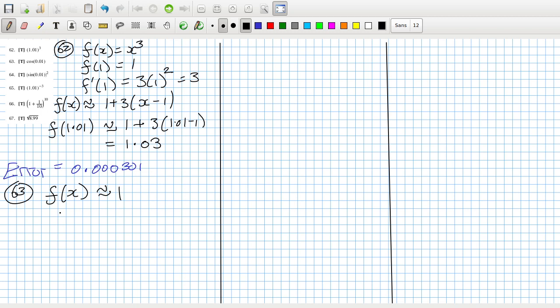So the error would equal 1 minus cos of 0.01. Zero. The error is 0.00000499995833, so tiny error.